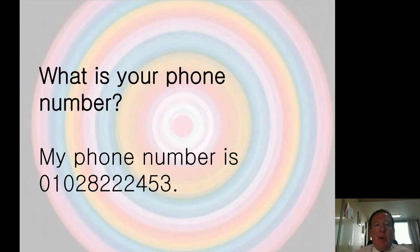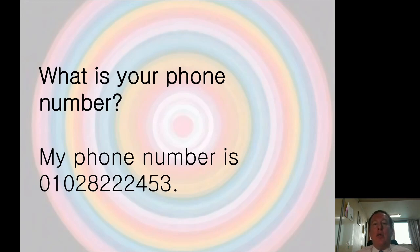Once you've made a good friend, you want to keep in contact. The easiest question is: 'What is your phone number?' In Korean, Gong Il Gong is 010. My phone number is 010-2822-2453. These days you can also ask: 'What is your Kakao?' 'What is your WhatsApp?' 'What is your Instagram?' 'What is your Facebook?' 'What is your Line?' So many ways to keep in contact, but the most common is: 'What is your phone number?'